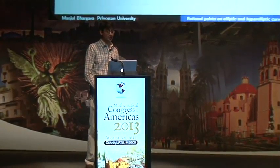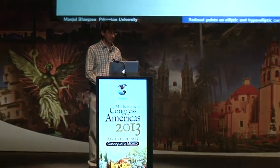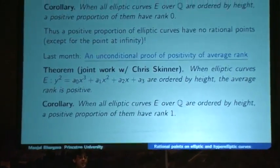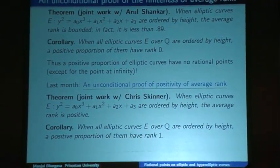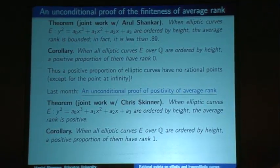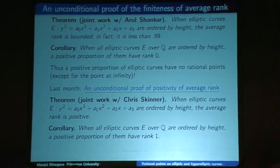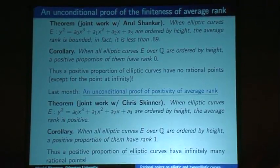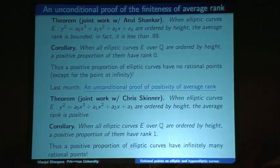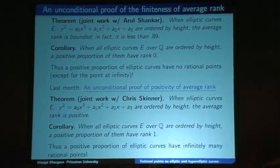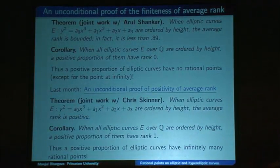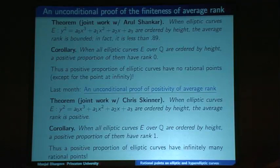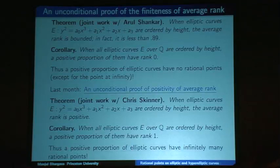Since a positive proportion have rank 1, the average rank must of course be bigger than 0. A consequence is that a positive proportion of elliptic curves have infinitely many rational points. So both things conjectured by Goldfeld and Katz–Sarnak — that a positive proportion should have rank 0 and a positive proportion should have rank 1 — can now be established at least partially. We get about 10% proportions in both cases. So a positive proportion have finitely many rational points, and a positive proportion have infinitely many rational points. The expected answer is of course 50–50.